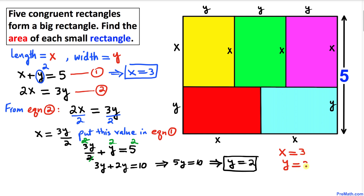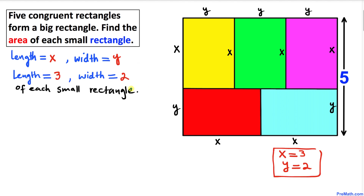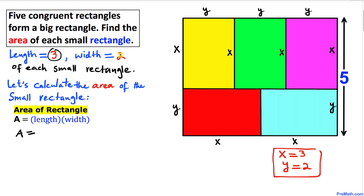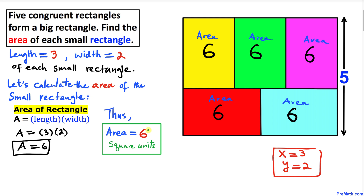So we conclude that the length of each small rectangle is three units and the width is two units. Now let's calculate the area. The area of a rectangle equals length times width, so area equals three times two, which gives us six square units. Thus the area of each small rectangle is six square units. Thanks for watching, and please don't forget to subscribe to my channel for more exciting videos.